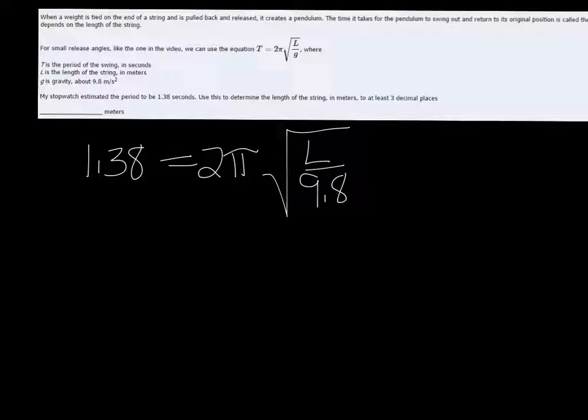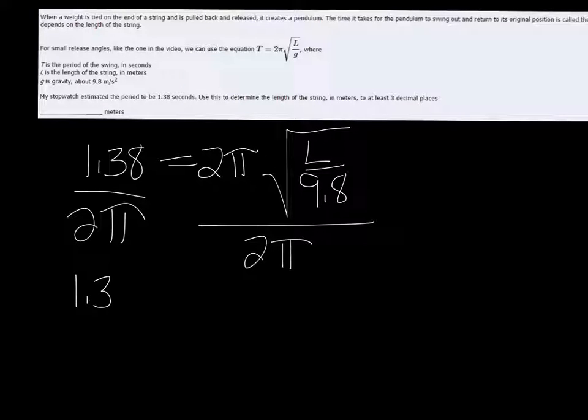So we need to solve for l. We're going to start off by dividing by 2π because we want to isolate that radical. Now I'm not actually going to put that in my calculator yet, we want to avoid rounding error, and no matter how many decimal places you use for π, it's still going to be a rounding.